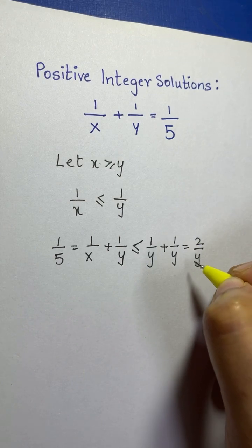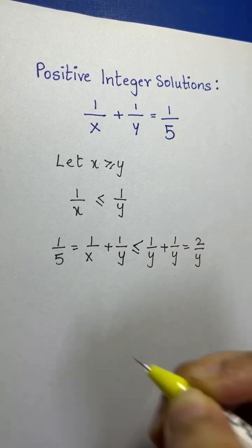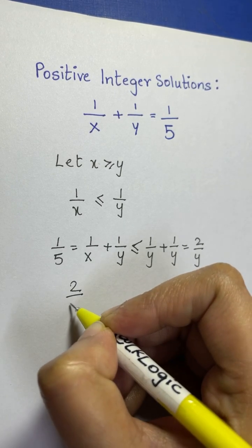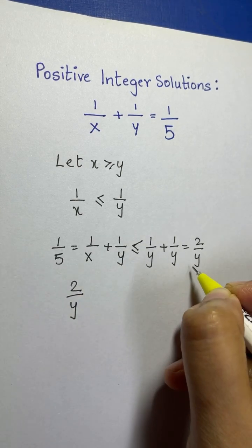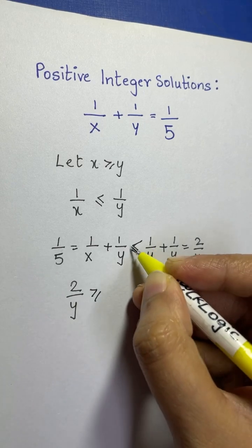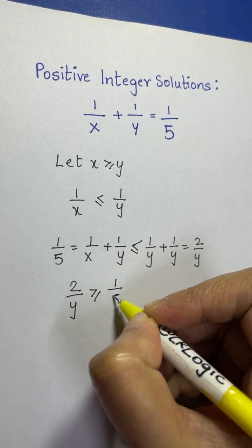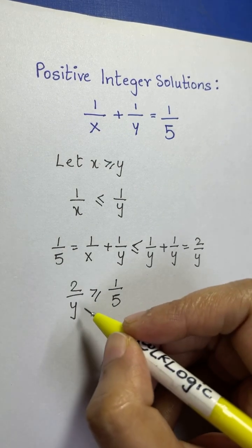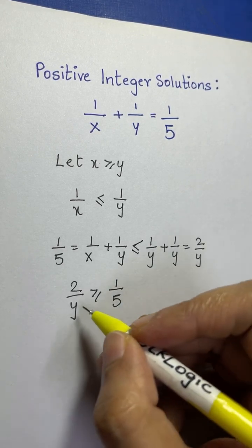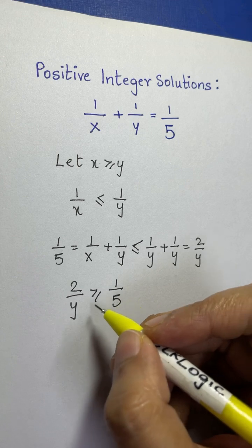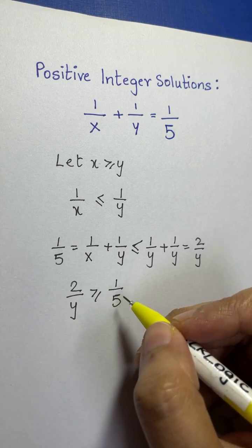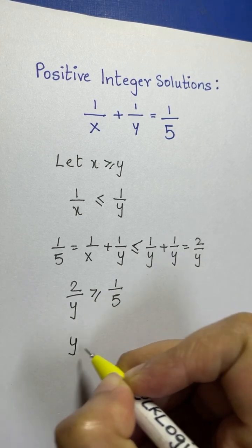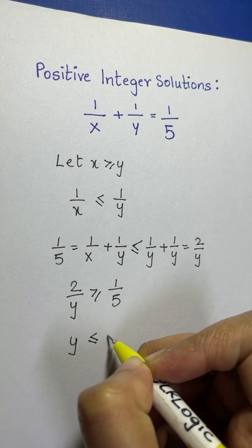Since y is a positive integer, we can solve this inequality. From 1/5 ≤ 2/y, multiplying both sides by 5y gives y ≤ 10. So the maximum value of y is 10: y ≤ 10.